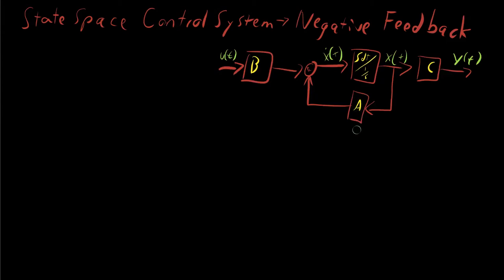And when you add negative feedback, what you are doing is, classically, you are grabbing the output y of t, and you are going to be feeding it into a new matrix that we'll define in a second.